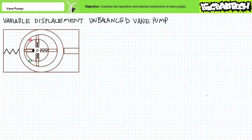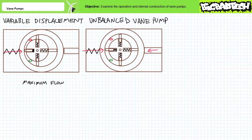Consider a cam ring positioned by a spring on one side and a piston on the other. If the spring exerts more force than the piston, the inlet port still sees a region of increasing volume and the outlet port still sees a region of decreasing volume as the rotor rotates. With the rotor in this maximum off-center position, the variable displacement unbalanced vane pump provides maximum flow. If the piston starts exerting increasing force, the cam ring shifts and realigns the rotor to a slightly more centered position, resulting in less volume differential and decreased displacement per revolution. The variable displacement unbalanced vane pump therefore provides reduced flow.